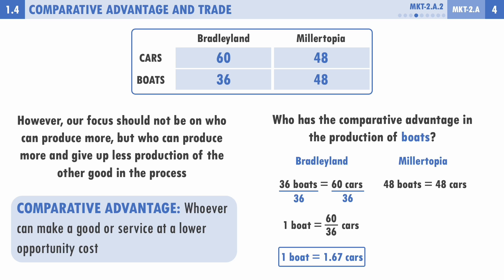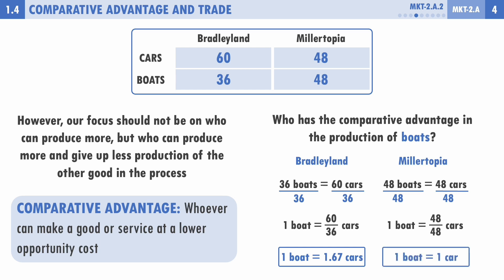For Millertopia, 48 boats equals 48 cars. Dividing both sides by 48 gives one boat equal to one car. Now, who has the comparative advantage in boats? Millertopia only has to stop making one car to produce one boat, while Bradley Land has to stop making 1.67 cars. Therefore Millertopia has the comparative advantage in boats, because they can produce one boat at a lower opportunity cost.